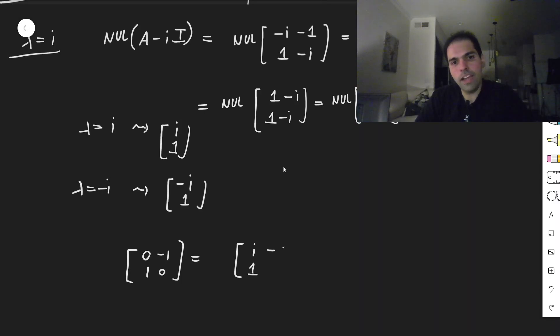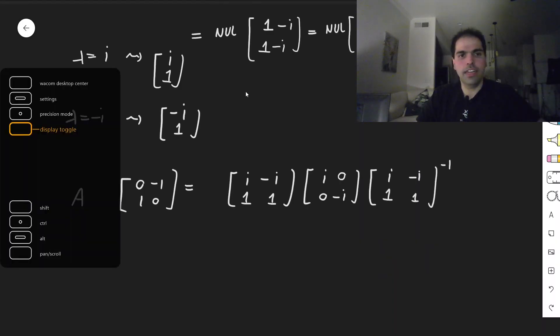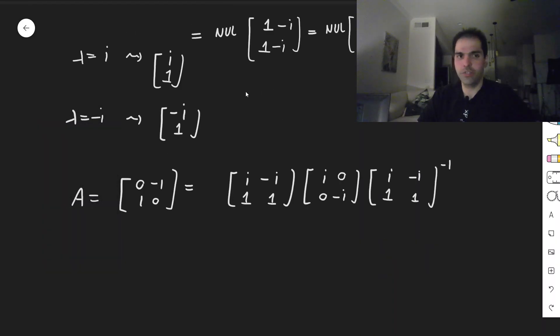That becomes i, 1, minus i, 1, and then i, 0, 0, minus i, and the inverse, so i, 1, minus i, 1, inverse. So this gives us our matrix A.